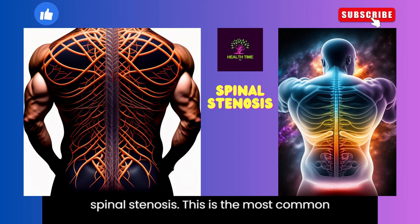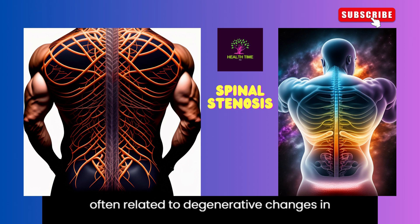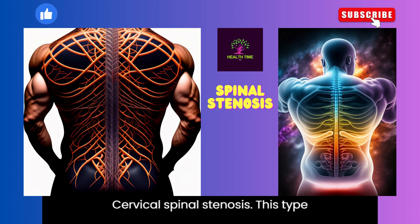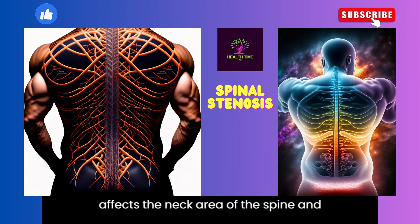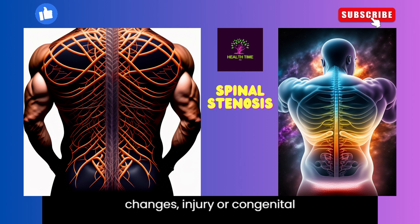Lumbar spinal stenosis is the most common type and occurs in the lower back. It typically affects older adults and is often related to degenerative changes in the spine, such as the development of bone spurs or thickened ligaments. Cervical spinal stenosis affects the neck area and can lead to symptoms in the arms, hands, and legs. It can result from age-related changes, injury, or congenital conditions.